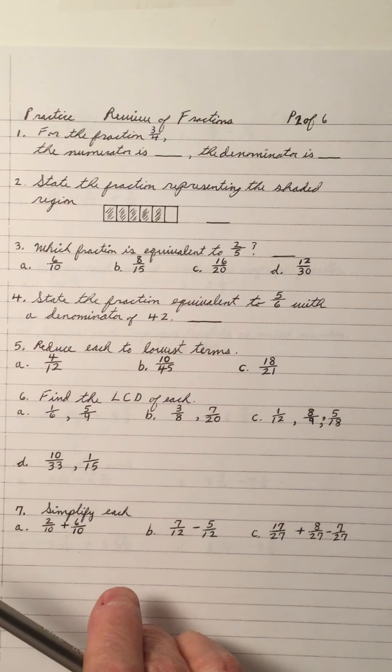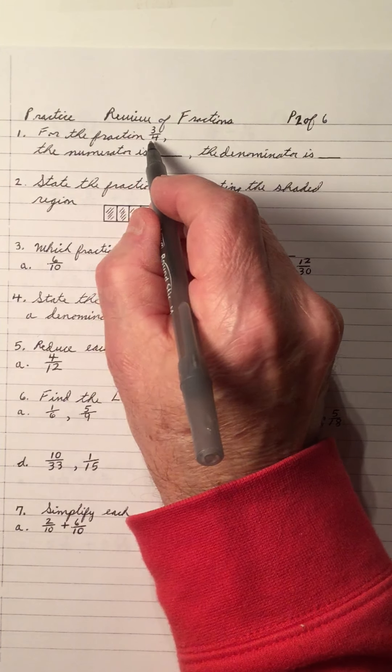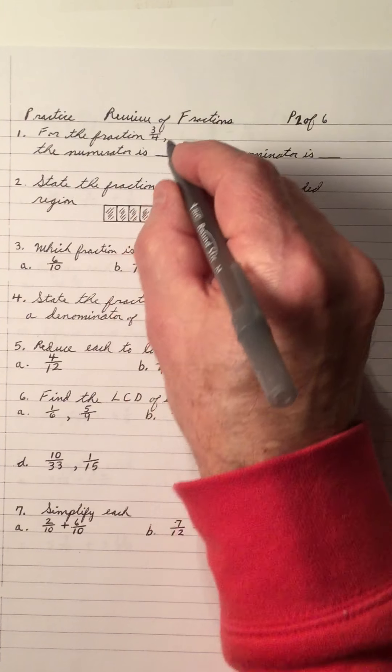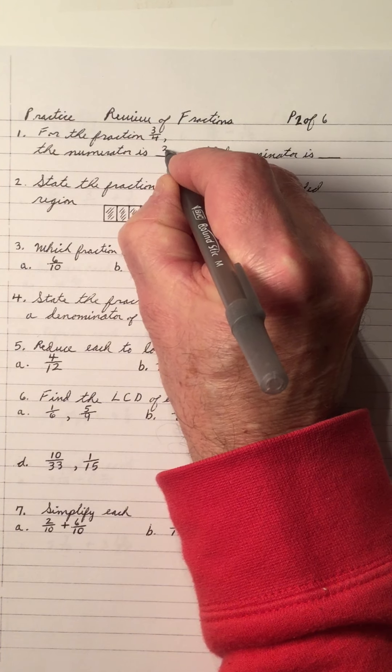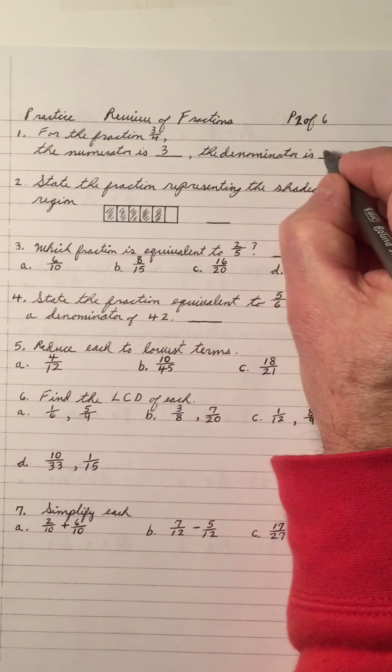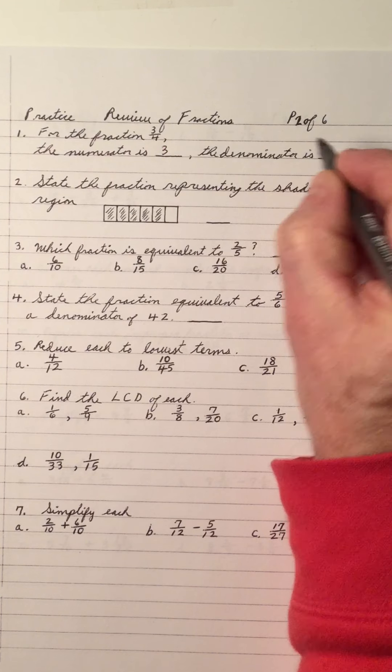A review of fractions. For the fraction 3 over 4, the numerator is 3 and the denominator is 4.